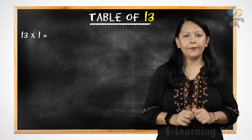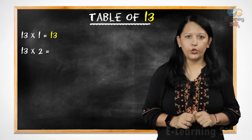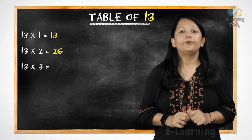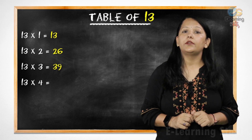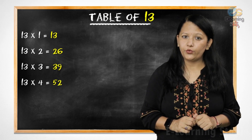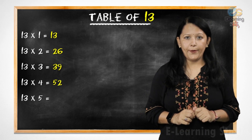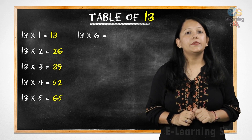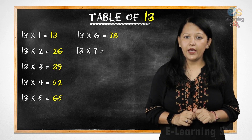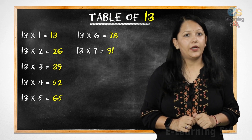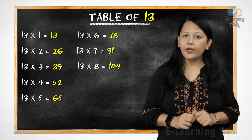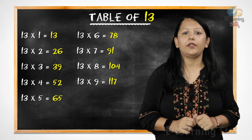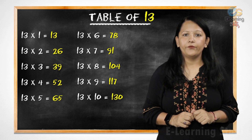13 ones are 13, 13 twos are 26, 13 threes are 39, 13 fours are 52, 13 fives are 65, 13 sixes are 78, 13 sevens are 91, 13 eights are 104, 13 nines are 117, 13 tens are 130.